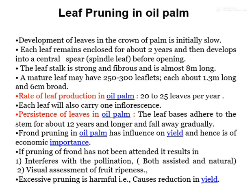Leaf pruning: development of leaves in the crown of the palm is initially slow. Each leaf remains enclosed for about two years and then develops into the central spear — the spindle leaf — before opening. The leaf stalk is strong and fibrous, almost 8 meters long. The mature leaf may have 250 to 300 leaflets, each about 1.3 meters long and 6 cm wide. The rate of leaf production in oil palm is 20 to 25 leaves per year, each new leaf carrying one inflorescence.